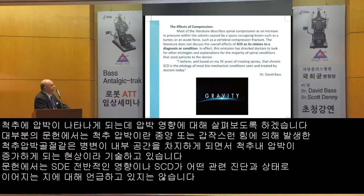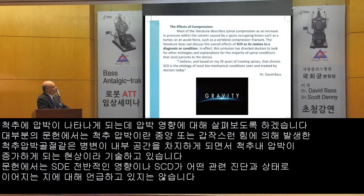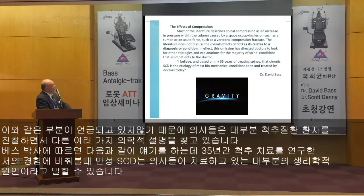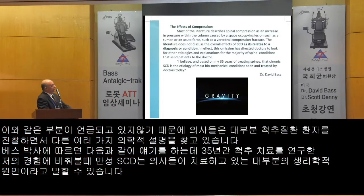The effects of compression. Most of the literature describes spinal compression as an increase in pressure within the column caused by a space-occupying lesion such as a tumor, or an acute force such as a vertebral compression fracture. The literature does not discuss the overall effects of spinal compression disorder as it relates to diagnosis or condition. In effect, the omission has directed doctors to look for other etiologies and explanations for the majority of spinal conditions that send patients to the doctor.